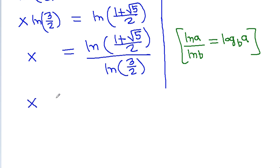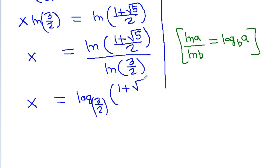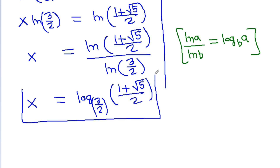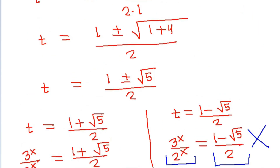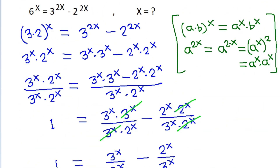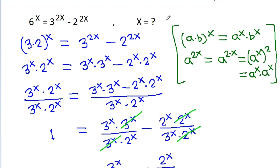So x will be equal to log base (3/2) of (1 plus square root of 5) divided by 2. Therefore, x is log base (3/2) of (1 plus square root of 5) divided by 2.